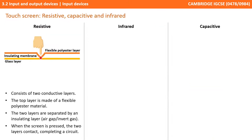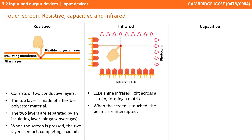A resistive touchscreen consists of two conductive layers of which the top layer is flexible. The two layers are separated by an air gap or insulating layer, and when the upper layer is pressed, the two layers connect, completing a circuit. With infrared touch screens, LEDs shine an infrared matrix across the screen. When the screen is touched, the beams are interrupted, and the point where the beams are interrupted determines the position of the touch.